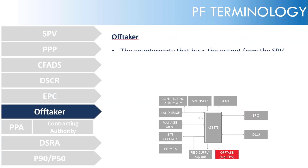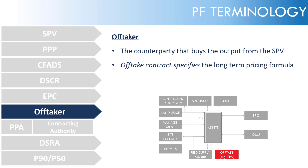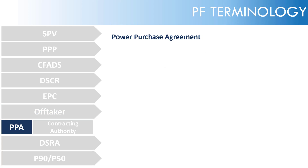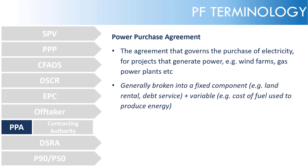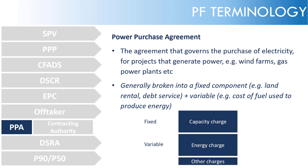The offtaker is the counterparty that buys whatever the output is from the SPV, and generally the offtake contract will specify a long-term pricing formula at which it will buy that output. PPA: a power purchase agreement. This is an agreement governing the purchase of electricity for projects that generate power, for example wind farms or gas power plants. For power plants, it's broken into a fixed component — for example the land rental and debt service — and a variable component, the cost of fuel used to produce the energy. So the fixed is a capacity charge, and the variable is the energy charge.